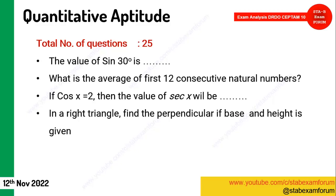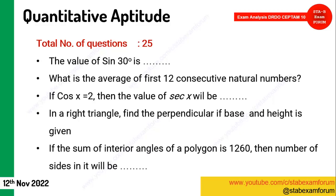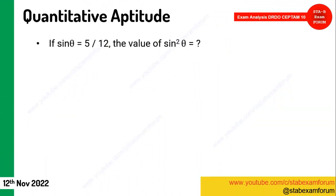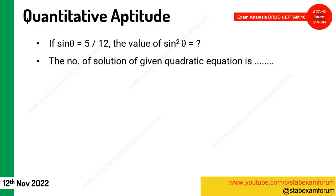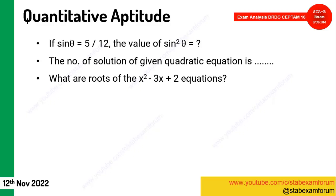A question: if the sum of interior angles is 1260°, how many sides does the polygon have? The correct answer was nine. More trigonometry value conversion questions appeared — given a sine theta value, find the sine squared value. Two questions on quadratic equations: the number of solutions of a given quadratic equation, and the roots of a quadratic equation.